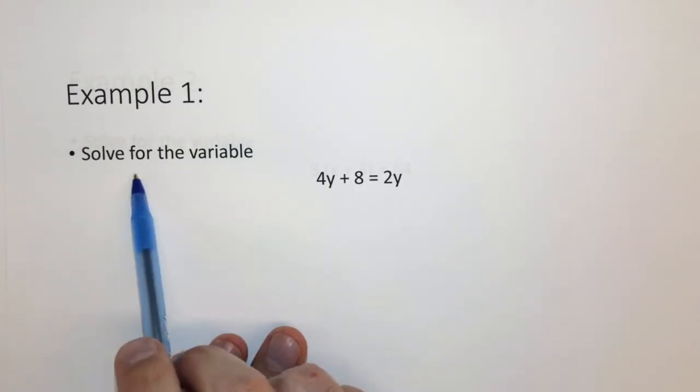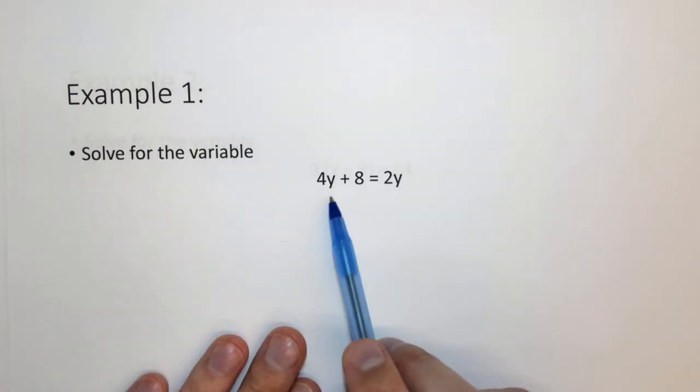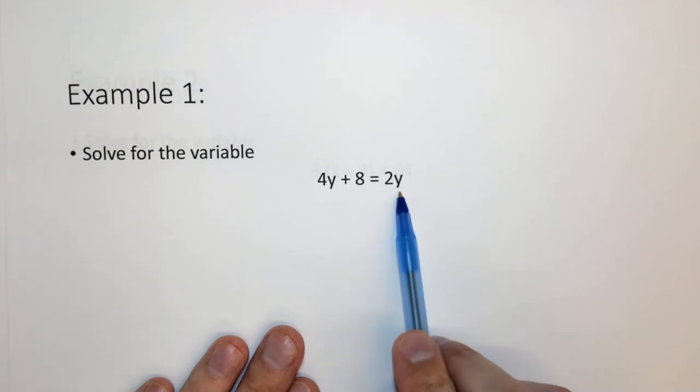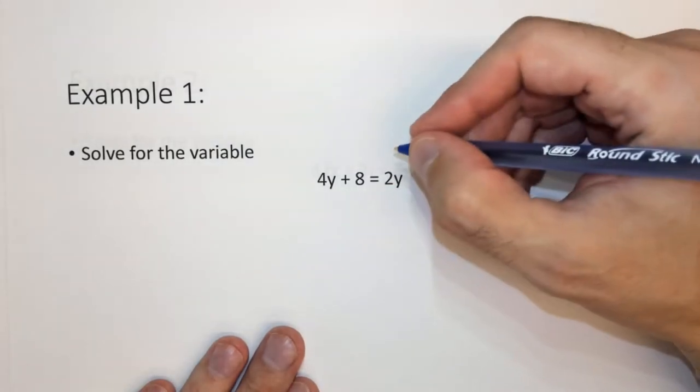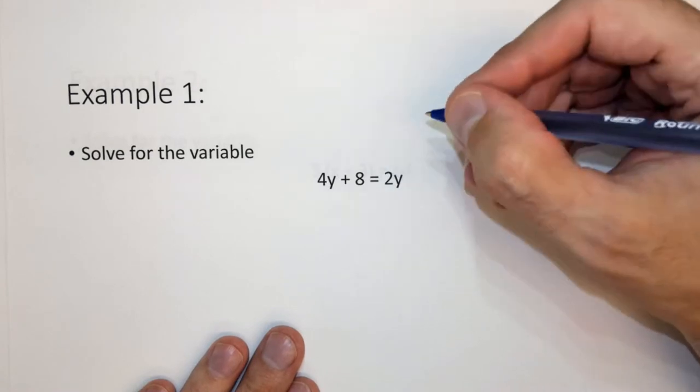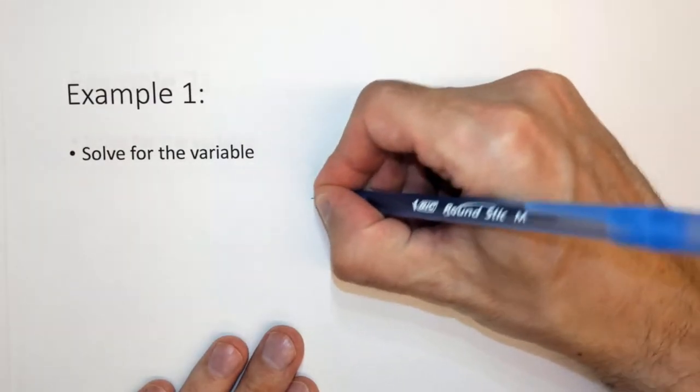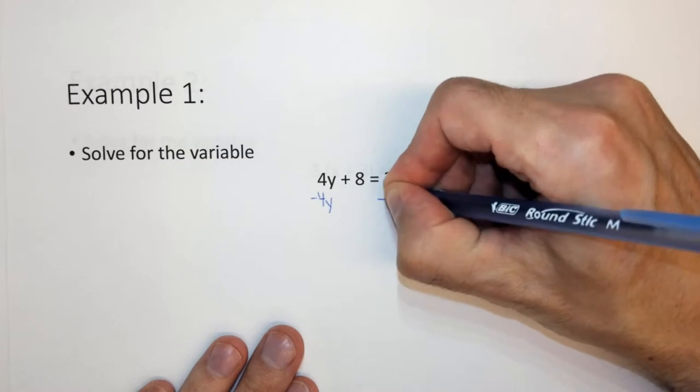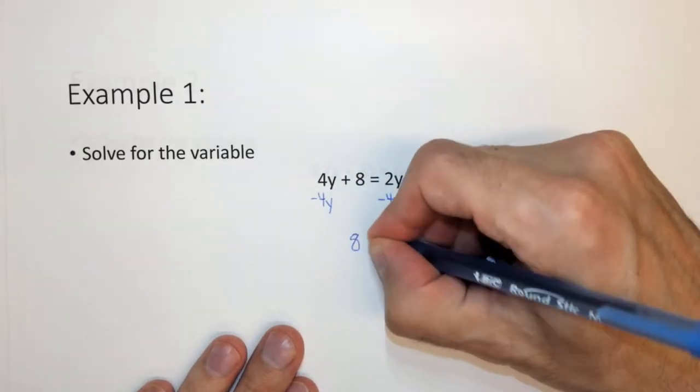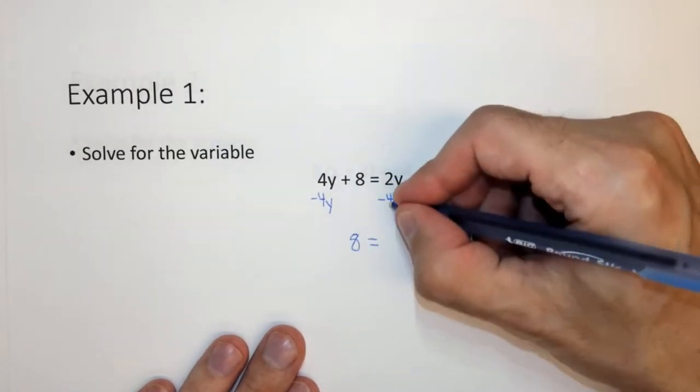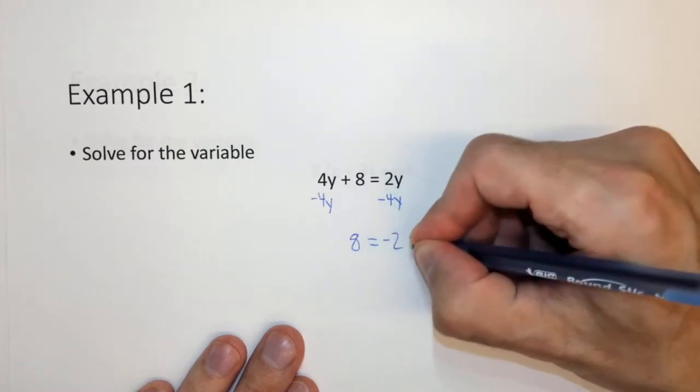Here we want to solve for y. We have 4y plus 8 equals 2y. The first thing I notice is that y's are on opposite sides, so I want to fix that. I subtract 4y from this side and subtract 4y from this side. I get 8 equals 2y minus 4y, which is negative 2y.